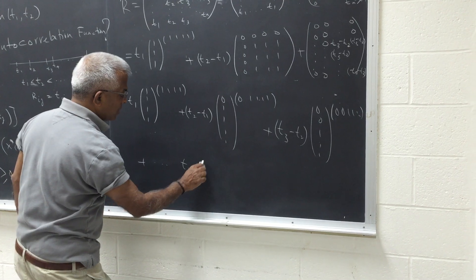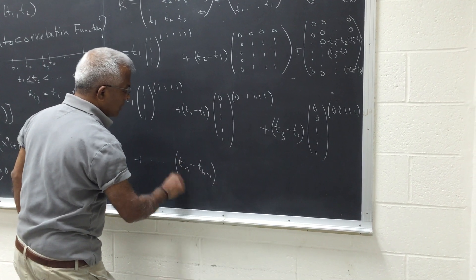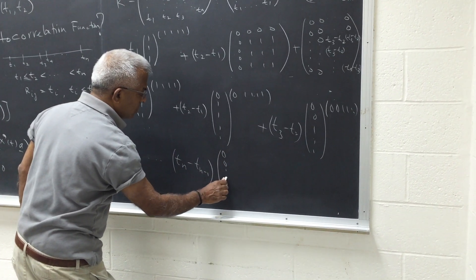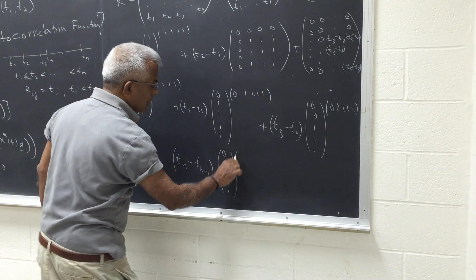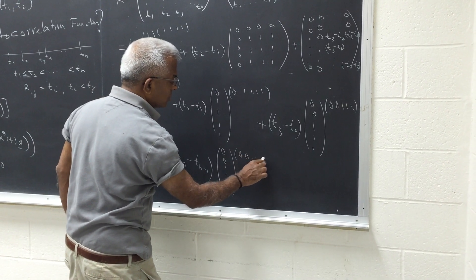The last one will be tn minus tn minus one. And zero, zero, all the way to zero, one. And its conjugate, zero, zero, one, one.